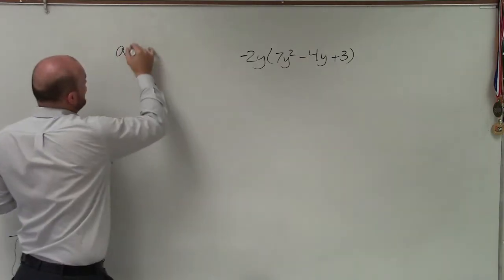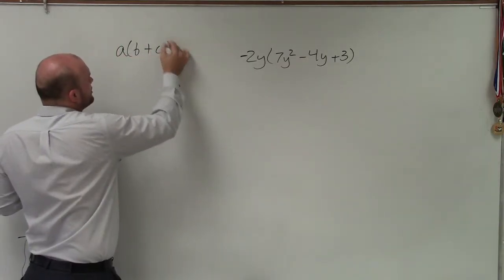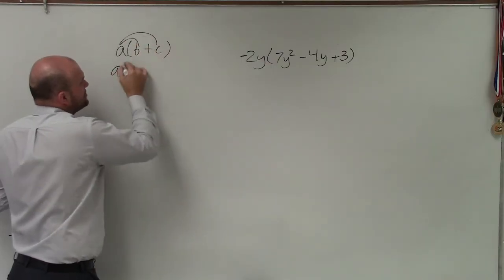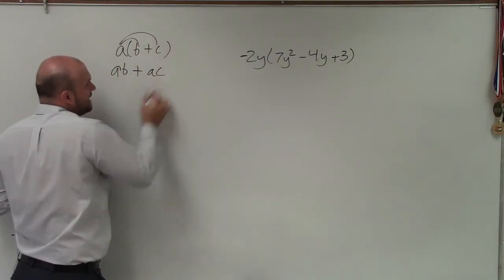When I remember the distributive property, if I just had some arbitrary terms, our variables a, b, and c, the distributive property tells us to multiply the a times both those terms. So a times b plus a times c.